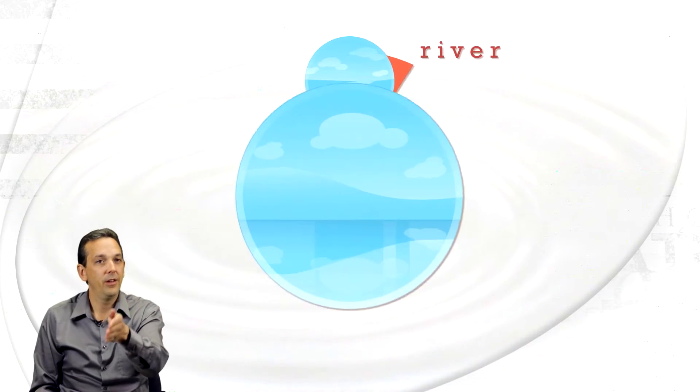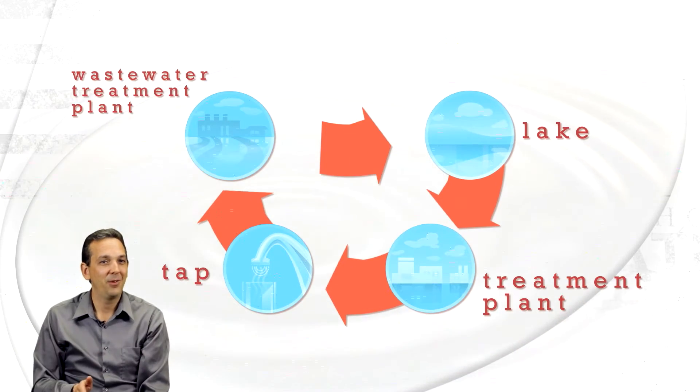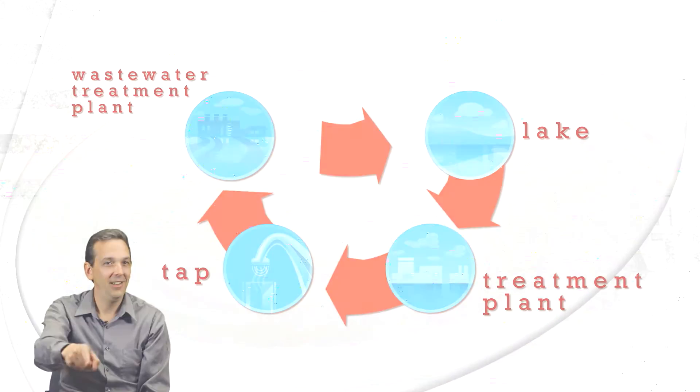The water is moving in a circle. It goes from the river, to the lake, to the treatment plant, to our taps, to the wastewater treatment plant, then back to the lake.